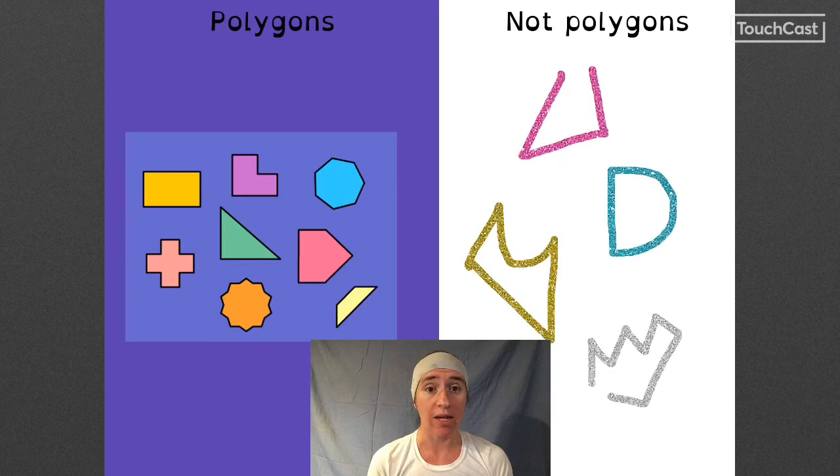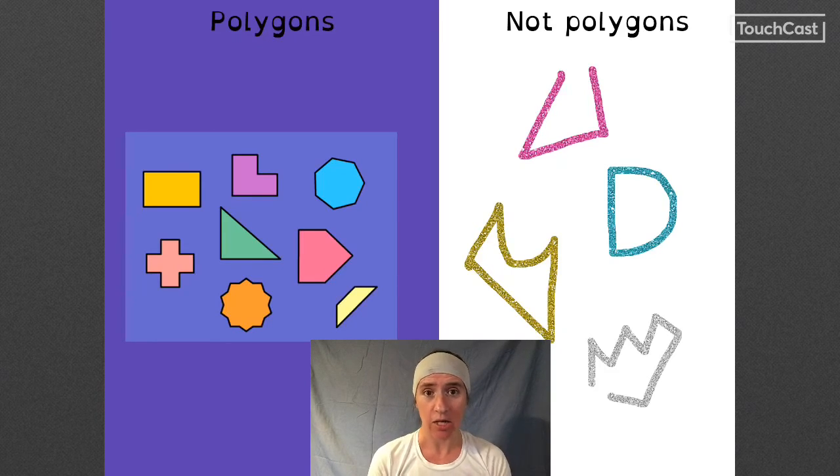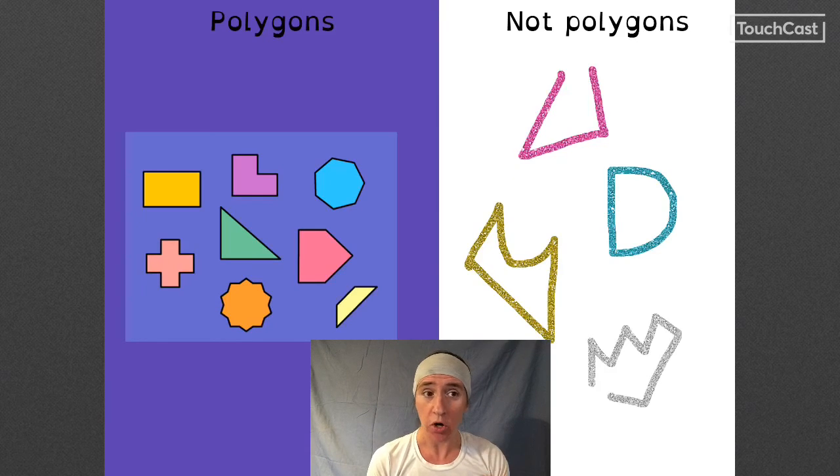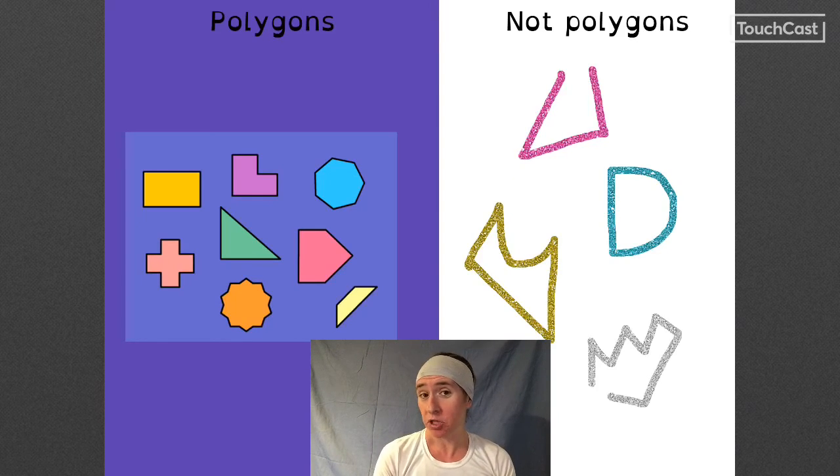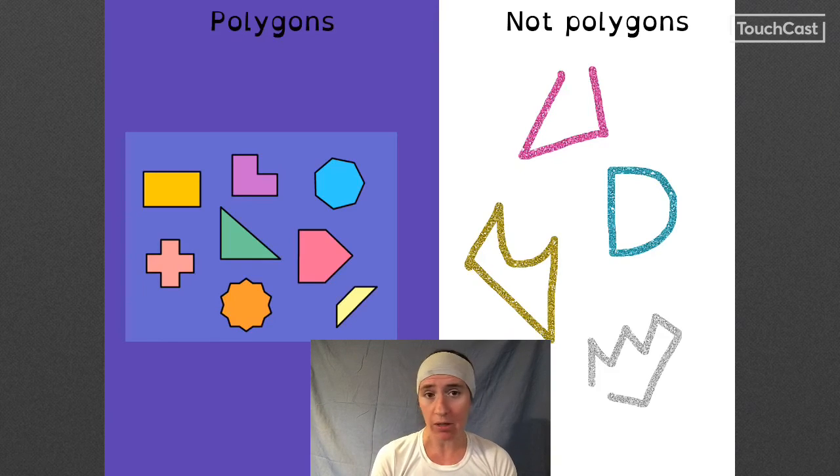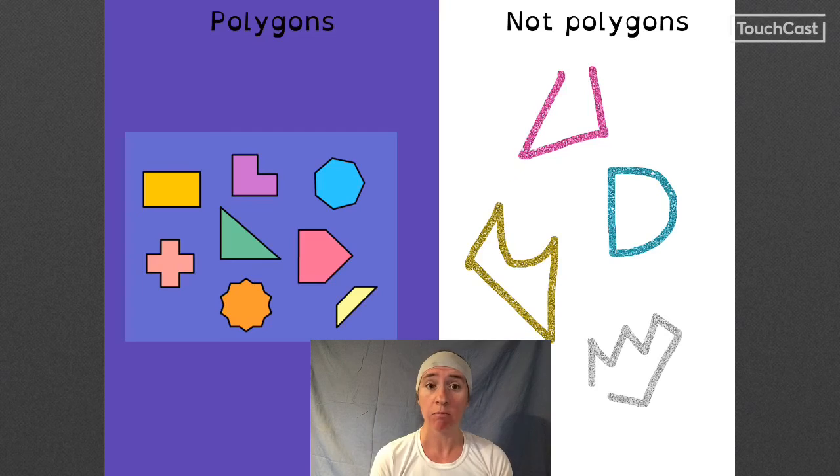Here are the two things that it needs. First of all, a polygon has to be made completely of lines, straight lines. So if you look over here, you'll see that the blue shape and the gold shape have curves. Those aren't lines and that's why they're not polygons.